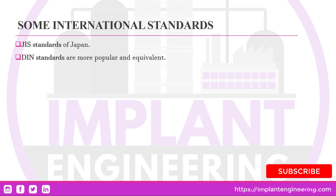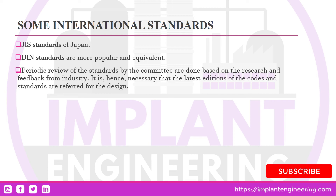Some other international standards include JIS — the Japanese Institute of Standards, found in Japan — and DIN standards, which are popular and widely used in Germany. Periodic review of these standards by committees is done based on research and feedback from different industries. It is therefore necessary that the latest editions of codes and standards are referred to for design.